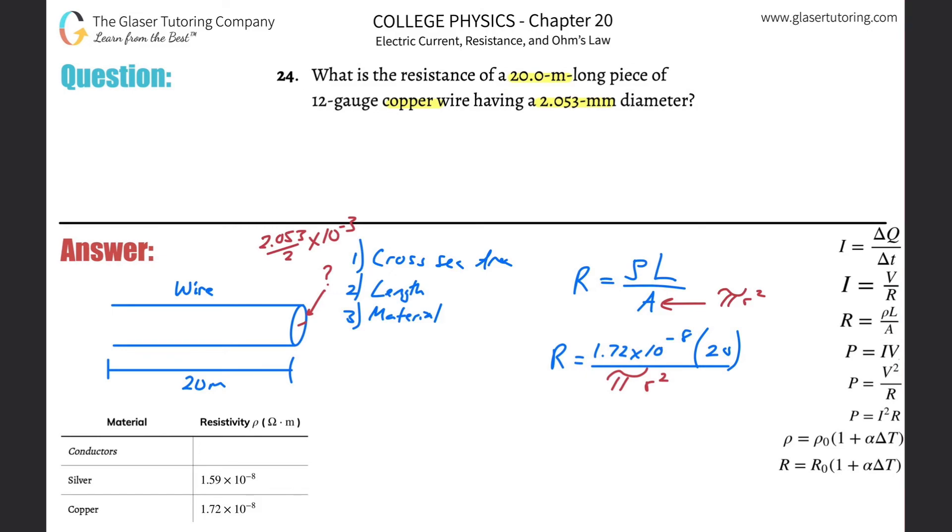All right, look at how easy that is. So what I'm going to do here is I'm going to get rid of this radius down there and I'm going to plug in 2.053 over 2 times 10 to the minus 3, and then I'm going to square that whole thing.